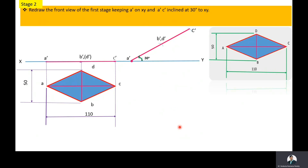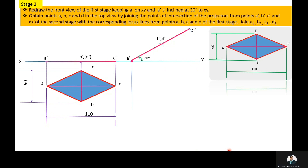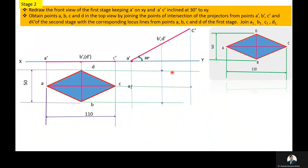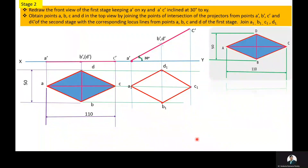Now we will draw the Stage 2 top view. Through A dash, B dash, D dash, C dash draw projectors vertically downward, and from the initial top view points A, B, C, D draw locus lines. Locate the intersection points: this is A1, this is B1, this is C1, and this is D1. Join all those points. This is the Stage 2 top view.